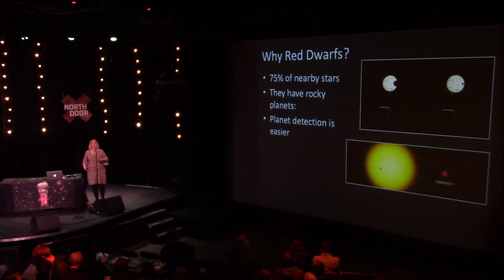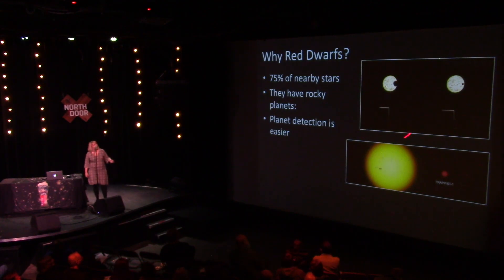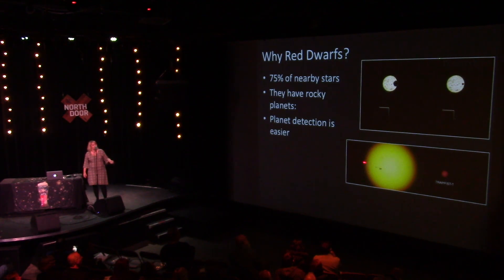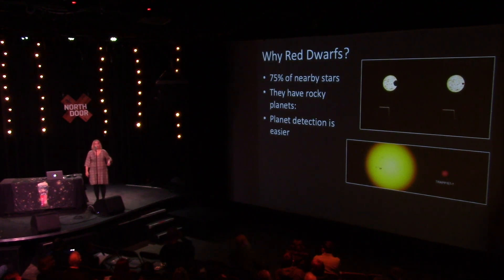The last reason is it's easier to find an Earth-like planet. If you're trying to find something the size of the Earth using something like the transit method — where you watch the planet move in front of the star and see how much the light decreases — it's going to be much easier to see something the size of the Earth transiting in front of a small star like TRAPPIST-1 that's a tenth the size of the Sun, than it is across the Sun. You're just going to get a bigger, stronger signal.